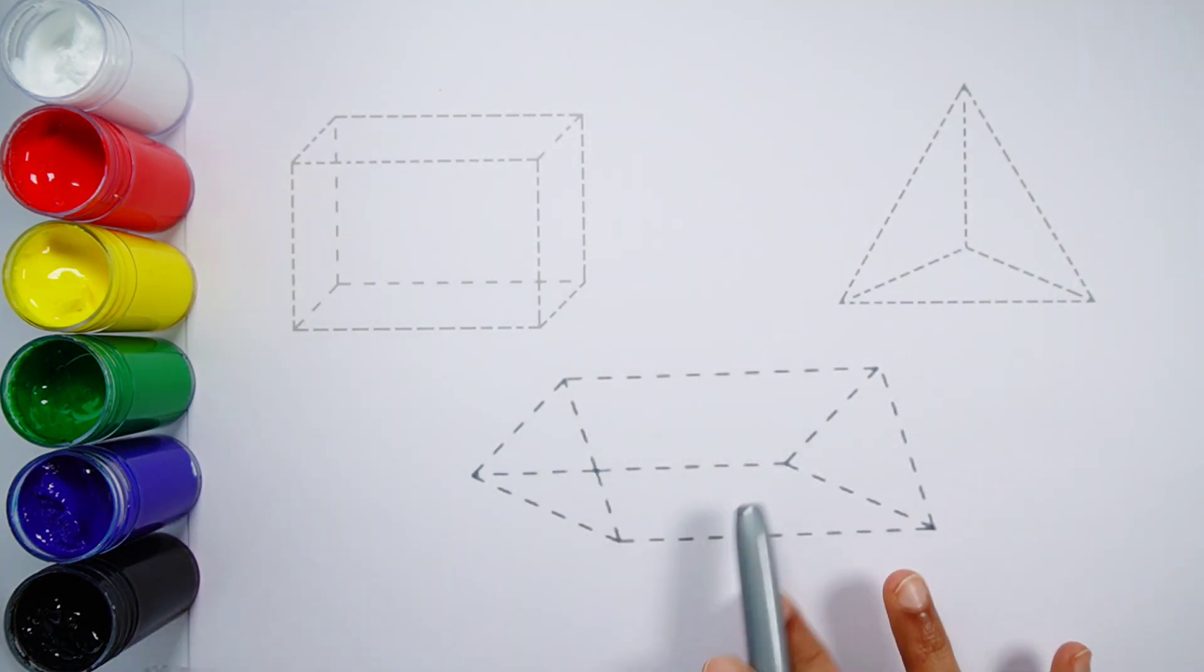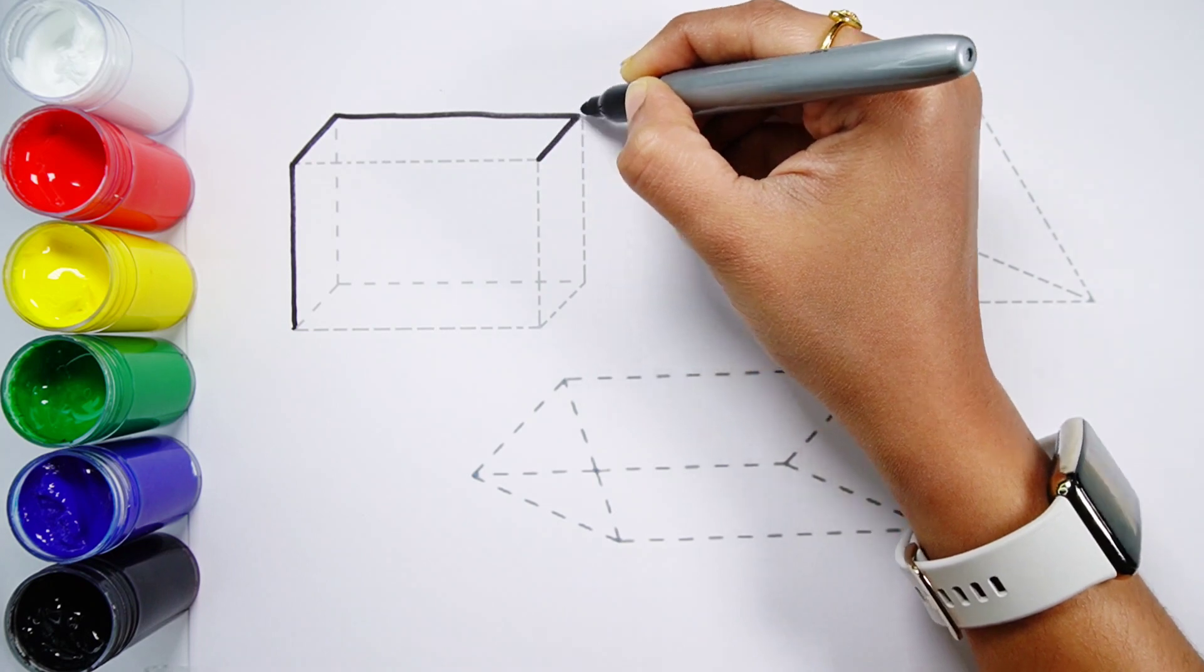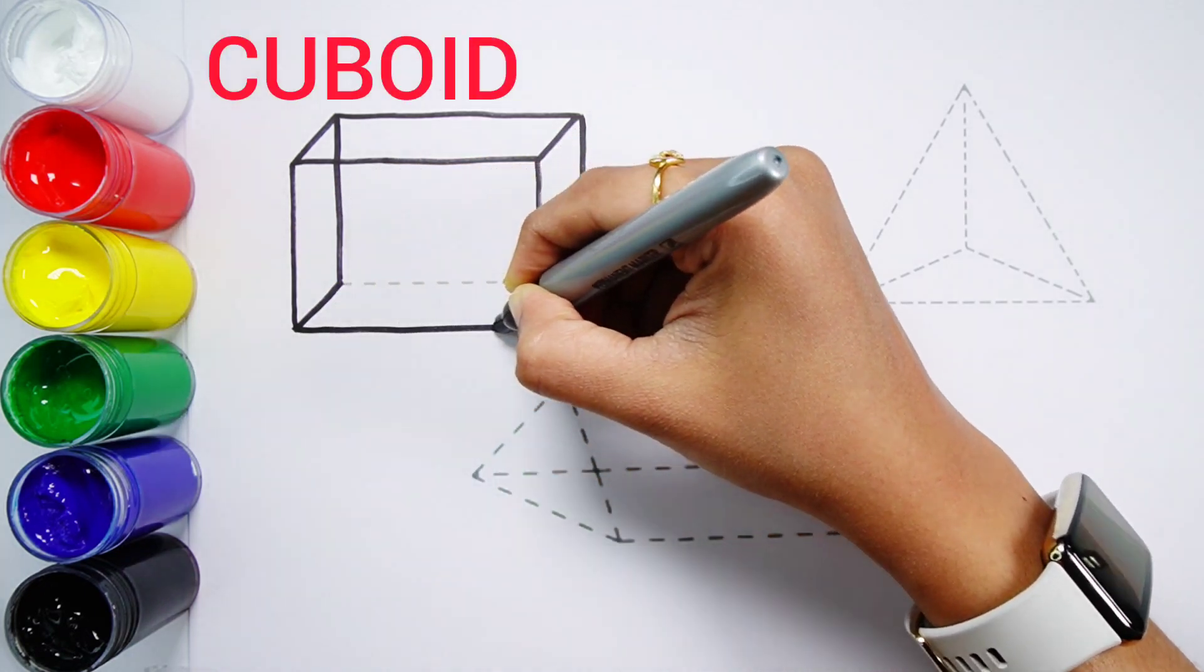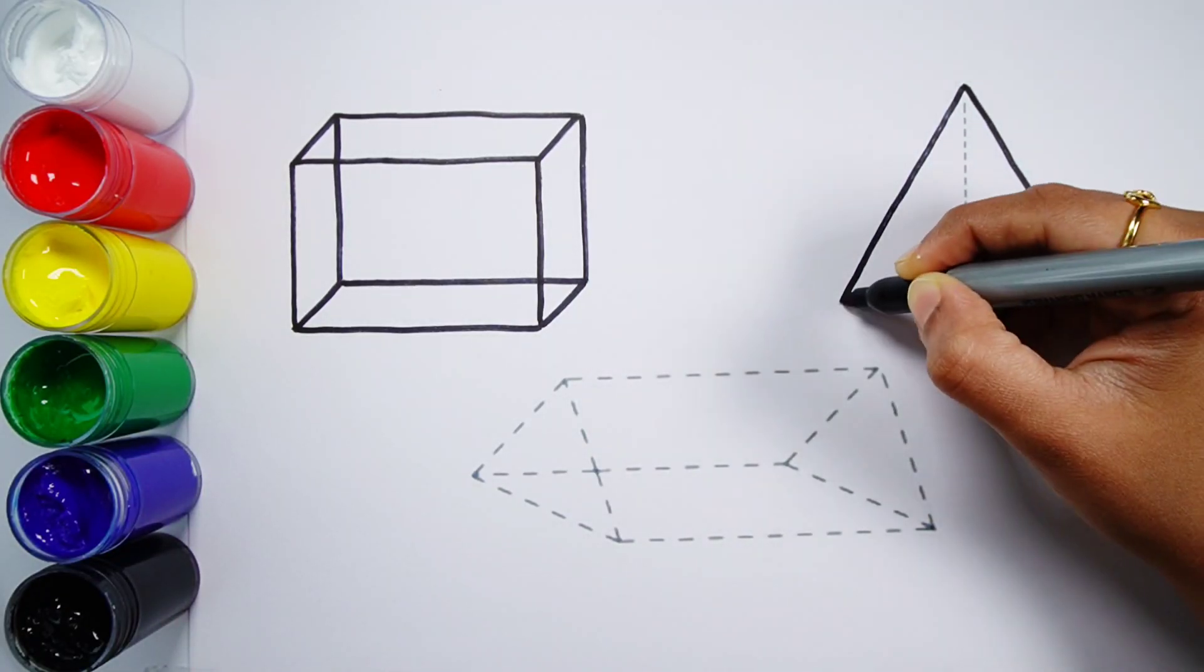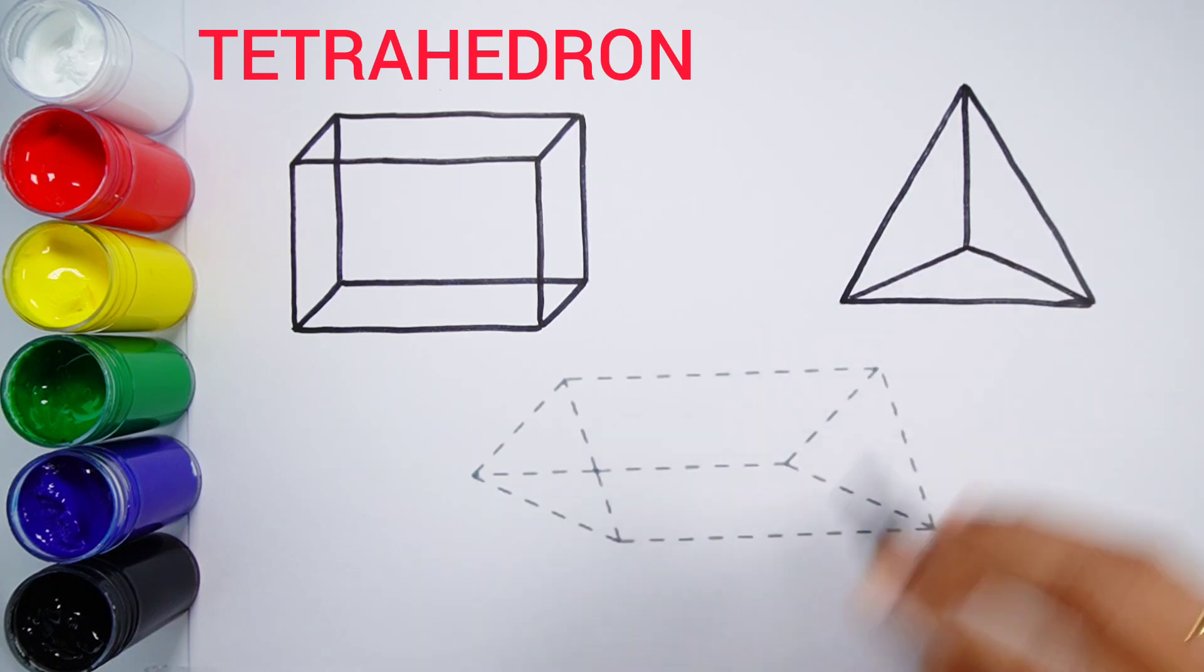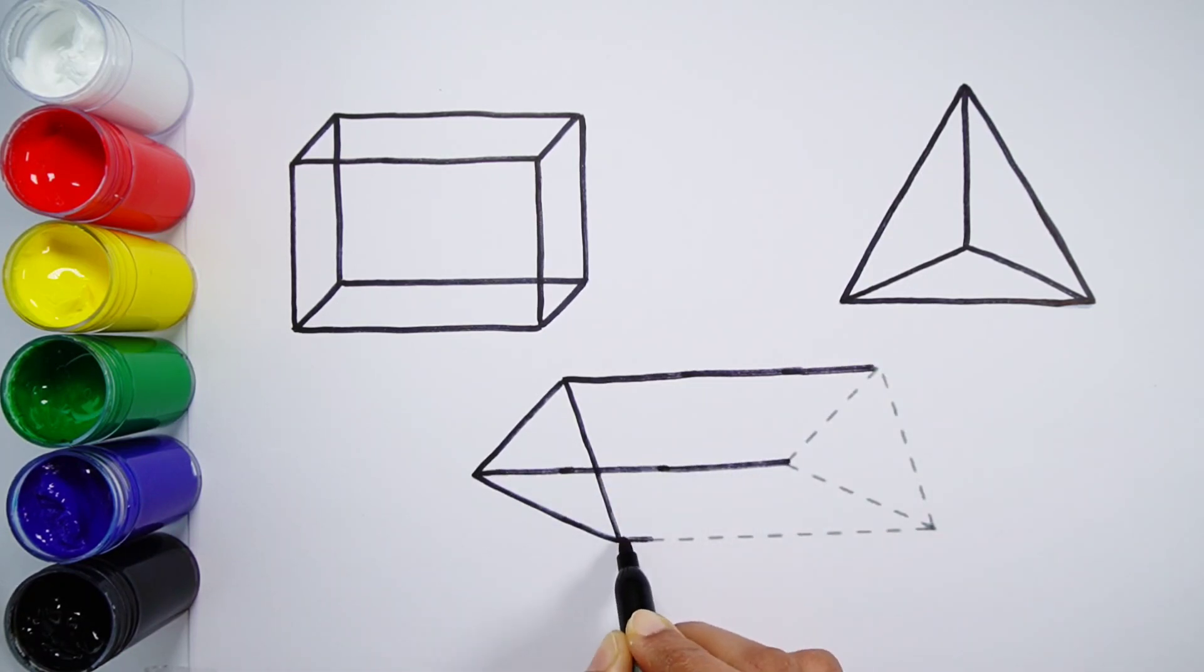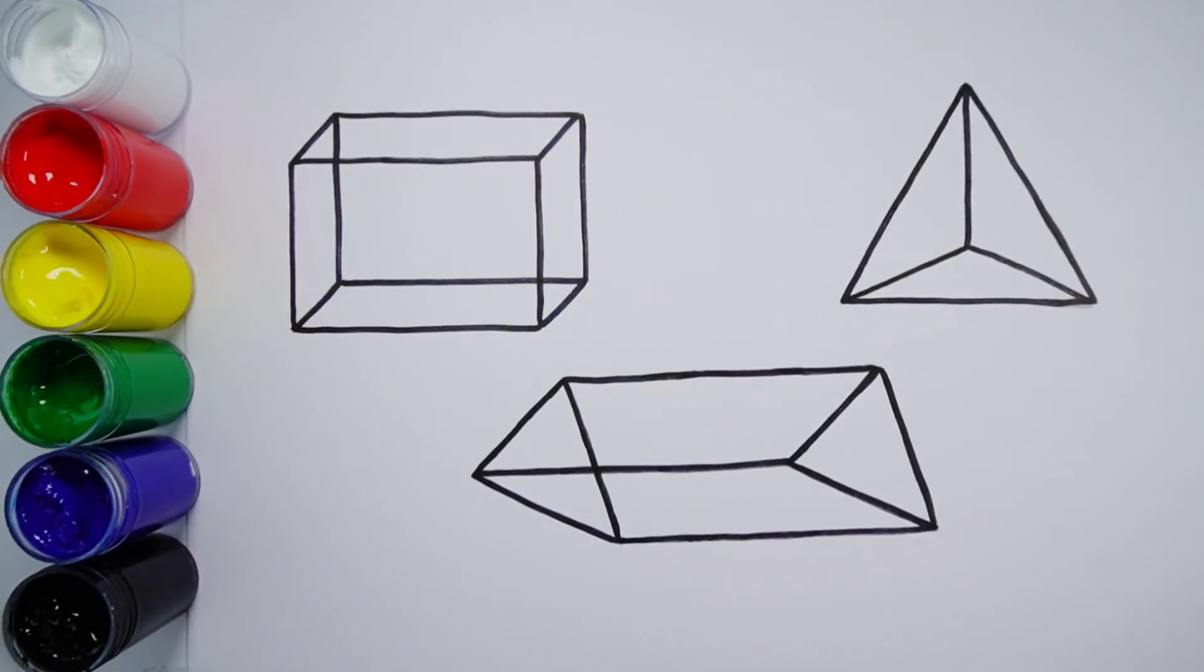Let's learn to draw some 3D shapes. Tetrahedron. Triangular prism, dark red color.